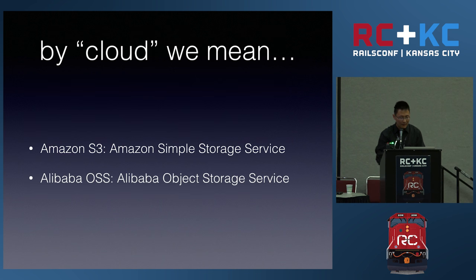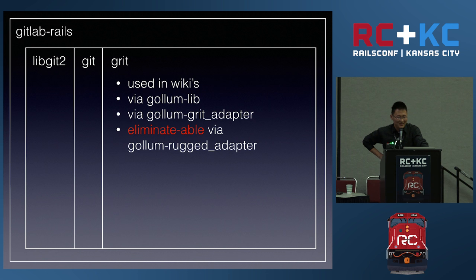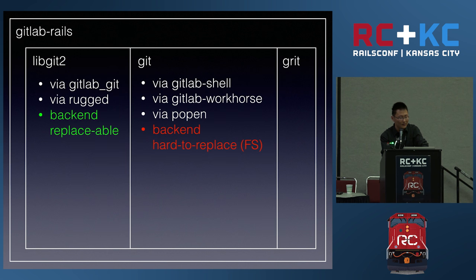What we did at Alibaba is use the fourth option: we killed the filesystem and used the cloud — specifically Alibaba OSS, which you can think of as the equivalent of Amazon S3. It's object storage in the cloud. It turned out that GitLab has three ways to access Git repositories: libgit2, git, and grit. Grit is a very old Ruby gem used only in the wiki part of GitLab via a gem called Gollum. Gollum was designed to have its Git access part pluggable, so we unplugged grit and plugged in Rugged, which uses libgit2. That makes the problem simpler — now we only deal with Git and libgit2.